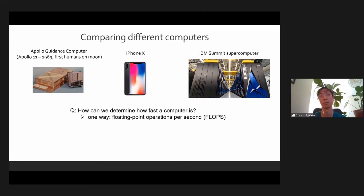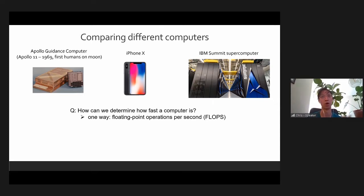Do we have any guesses for the Apollo computer? How many flops was it capable of 50 years ago? A hundred, a thousand, three hundred, twenty — these are reasonable numbers. You would think 50 years ago it's maybe not that fast, so hundreds to thousands. It turns out it was actually pretty good — it was about 14,000, which for 50 years ago on a clunky machine like that is pretty impressive. Computers are really, really powerful even 50 years ago.